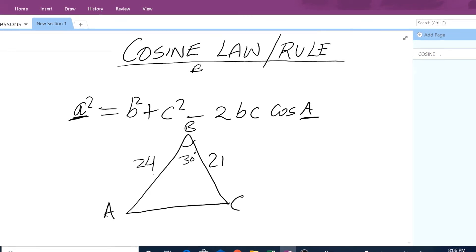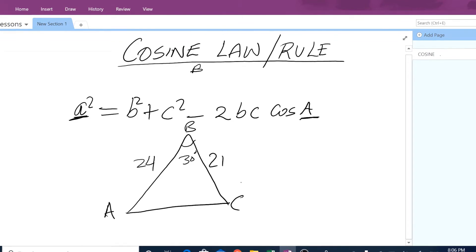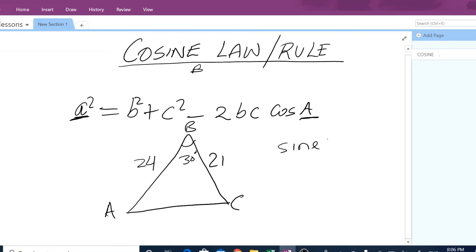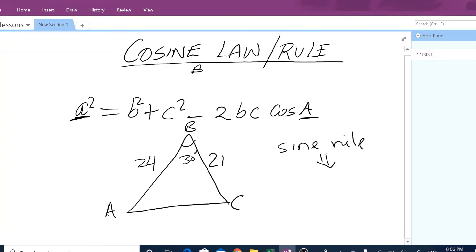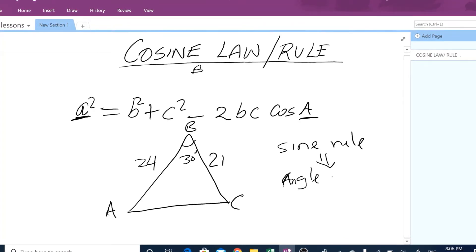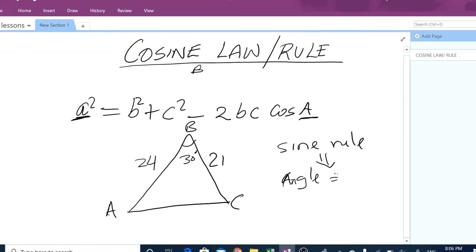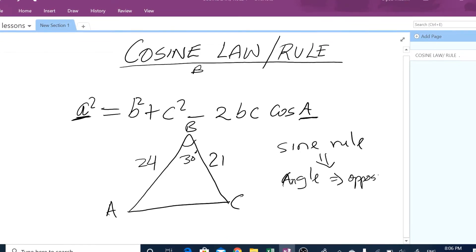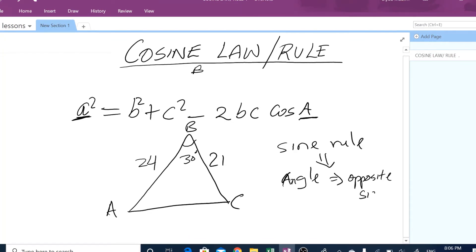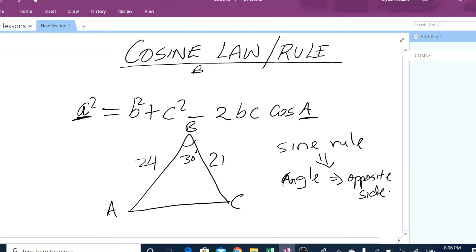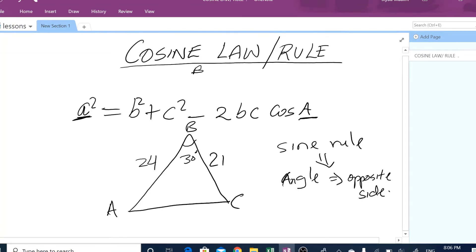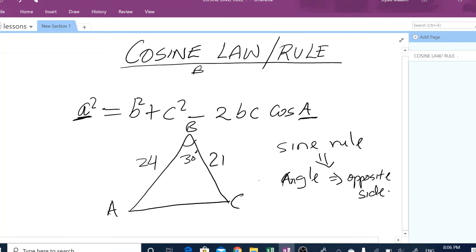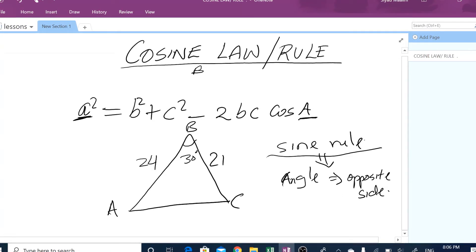So definitely, we have to use cosine, but let me say why we cannot use sine rule here. We use sine rule when we have an angle and its opposite side. Whenever you have an angle and its opposite side and another side or another angle, then you will use the sine rule.